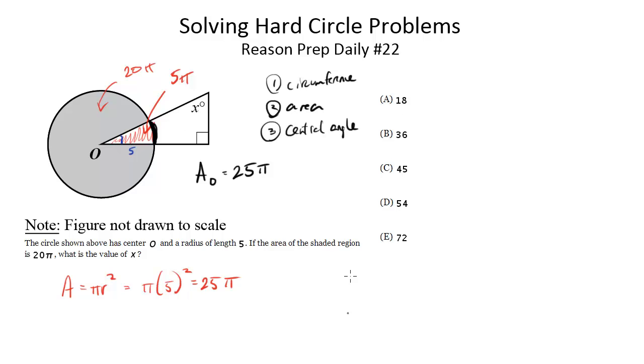So it is 5π out of 25π, right? This is the area of the wedge over the total area. This is the fraction of the circle this represents. So the π's cancel. We're left with 1/5.